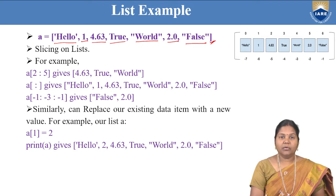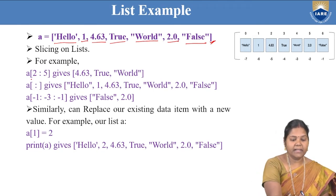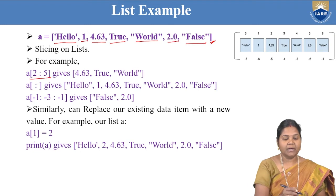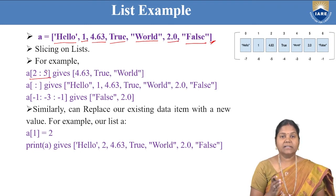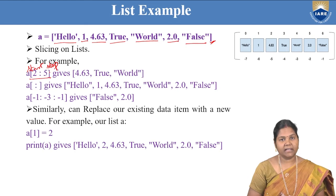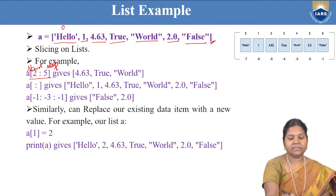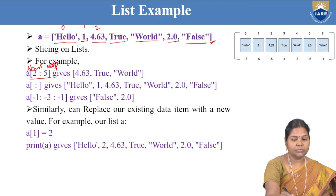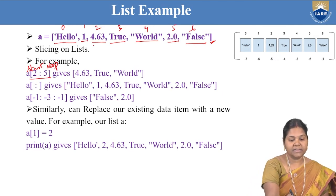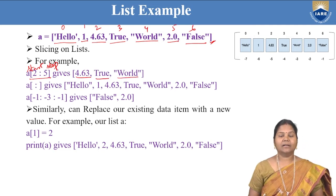An advantage of the list data type is that we can apply slicing operators on a list. If you write a[2:5], then 2 is the start value and 5 is the stop value — the start value is inclusive whereas the stop value is exclusive. So indices 2, 3, and 4 are retrieved. For example, at index 0 through 6, writing 2 to 5 means the 2nd, 3rd, and 4th items — 4.63, True, and 'world' — are retrieved.